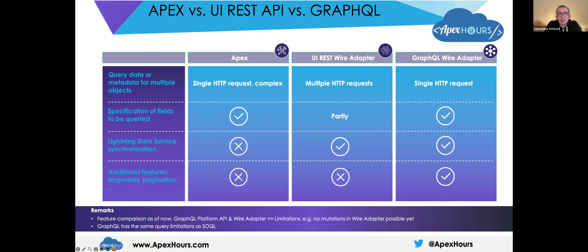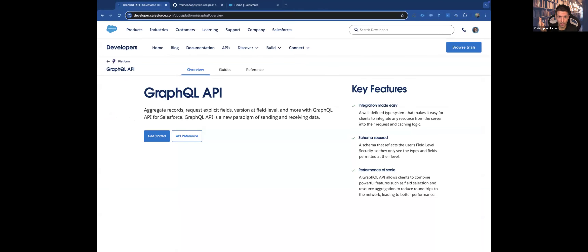A small remark: the mutations — CRUD or modifying operations — are unfortunately as of now only supported in the platform API. External services calling Salesforce can already leverage this, but it's not yet supported in the wire adapter. So for now in the LWC GraphQL wire adapter, you can only leverage queries. In terms of limits or limitations with GraphQL, they are broadly the same as those you have with SOQL. Regarding mutations, that's what I meant about Salesforce adding more and more features to GraphQL — mutation was not part of the initial scope. It was part of the Summer release, so it's a rather new thing, currently in beta.